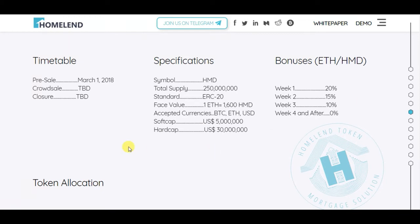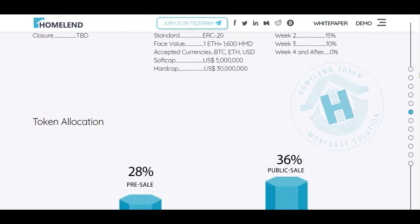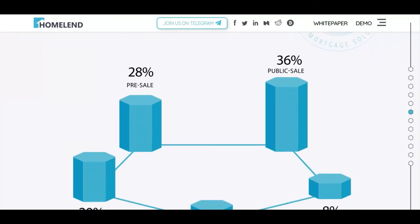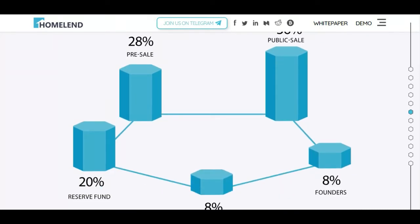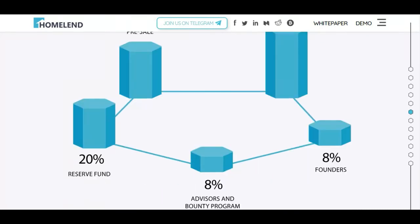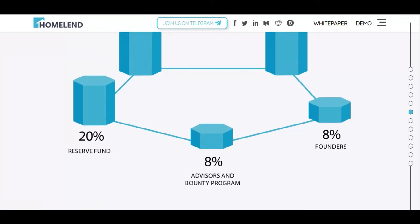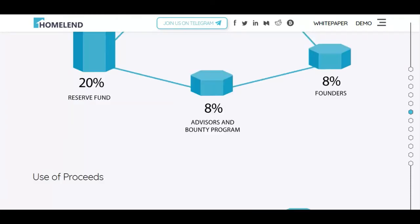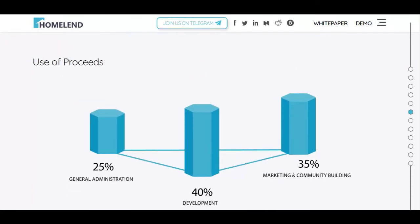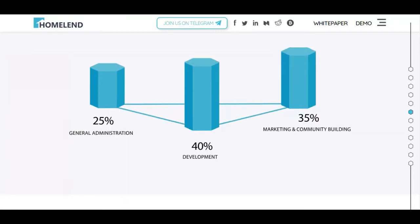Their ICO is ongoing. Token allocation is: 28% for pre-sale, 36% for public sale, 20% reserve fund, 8% for advisors and bounty program, and 8% for founders. Use of proceeds covers general administration, development, marketing, and community building.